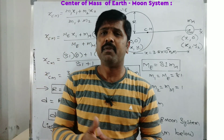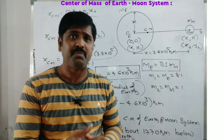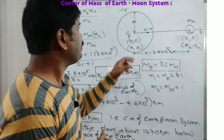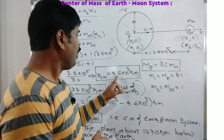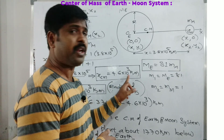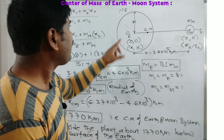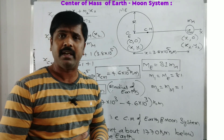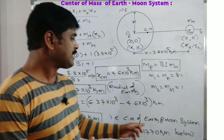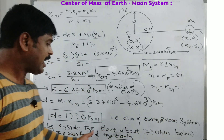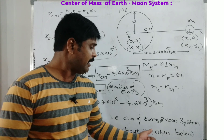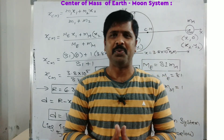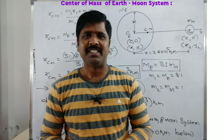Finally, we can conclude that the center of mass of the Earth-Moon system lies inside the Earth — about 1770 km below the surface of the Earth. Please do like and subscribe to my channel, Nature of Physics.